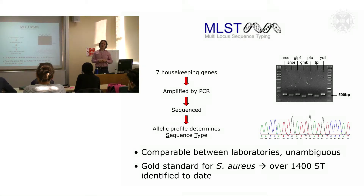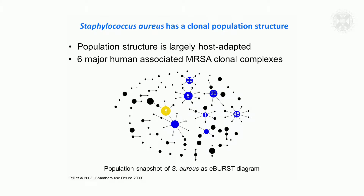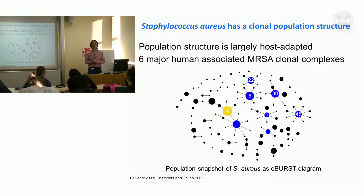There are now over 3,000 sequence types identified for Staph aureus, and this has given us a good sense of the overall population diversity for the species. More recently, whole genome sequencing is giving us much better resolution of diversity across the entire Staph aureus species. It has a largely clonal population structure, meaning it evolves and diversifies by mutation more often than by recombination — that is, the horizontal acquisition of short stretches of DNA between different strains.